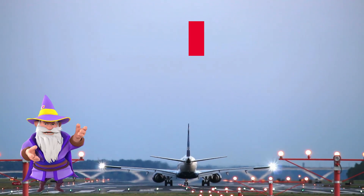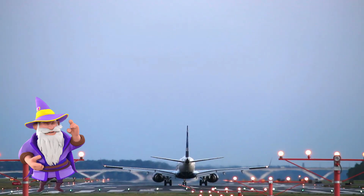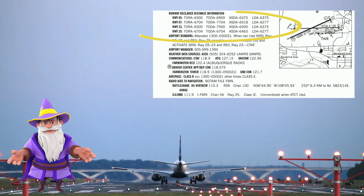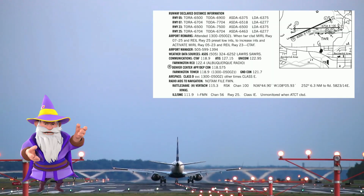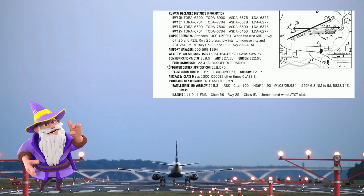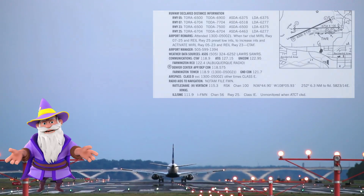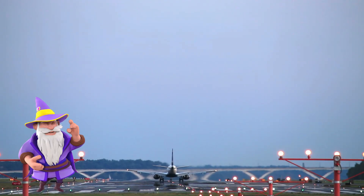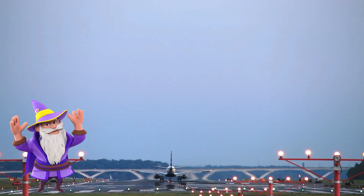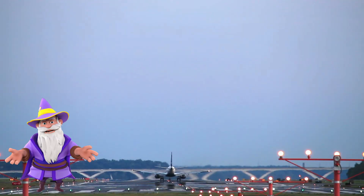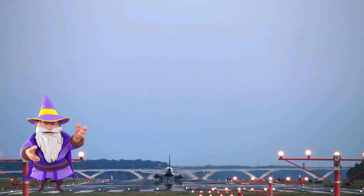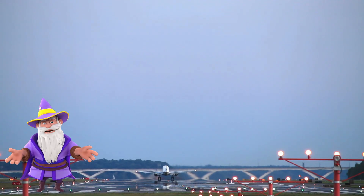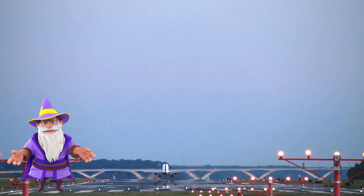Runway distances — every pilot sees them on the airport chart. But do you really know what they mean? Understanding declared runway distances is crucial for safe takeoffs and landings. These distances determine whether you have enough runway to get airborne, stop safely in an emergency, or land without overrunning the pavement.